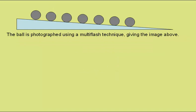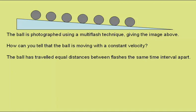The ball is photographed using a multi-flash technique, giving the image above. How can you tell from this image that the ball is moving with a constant velocity? Well, the ball has travelled equal distances between flashes and the flashes will be the same time interval apart.